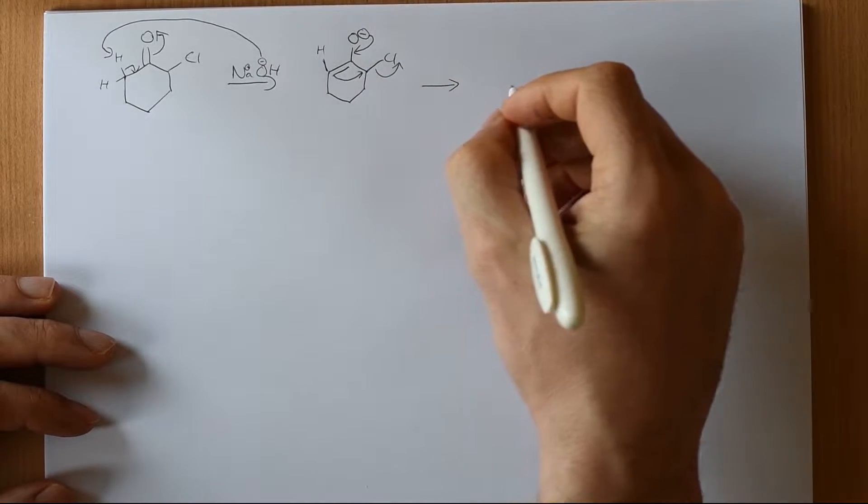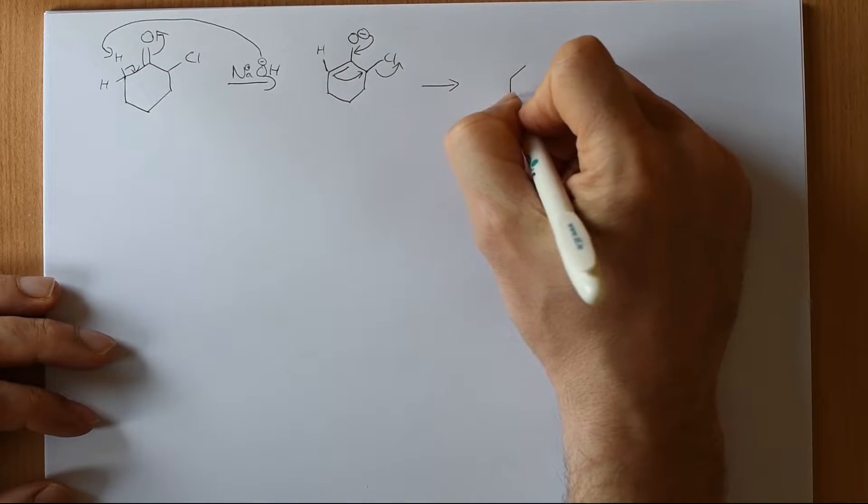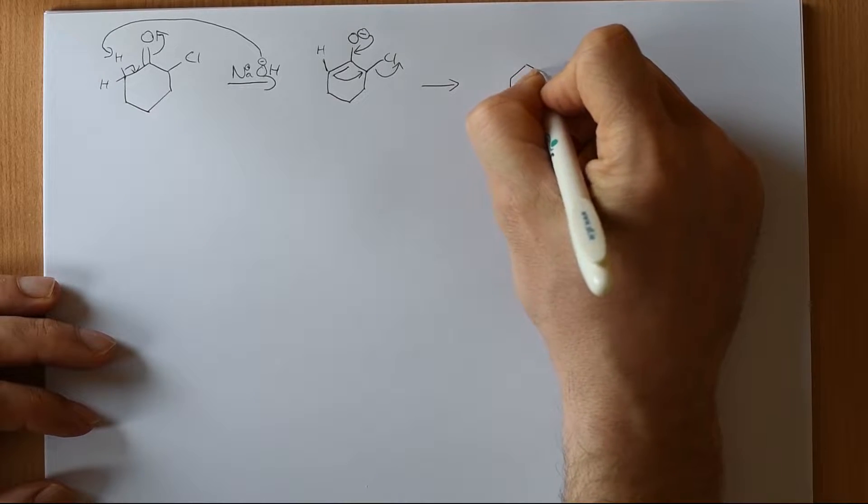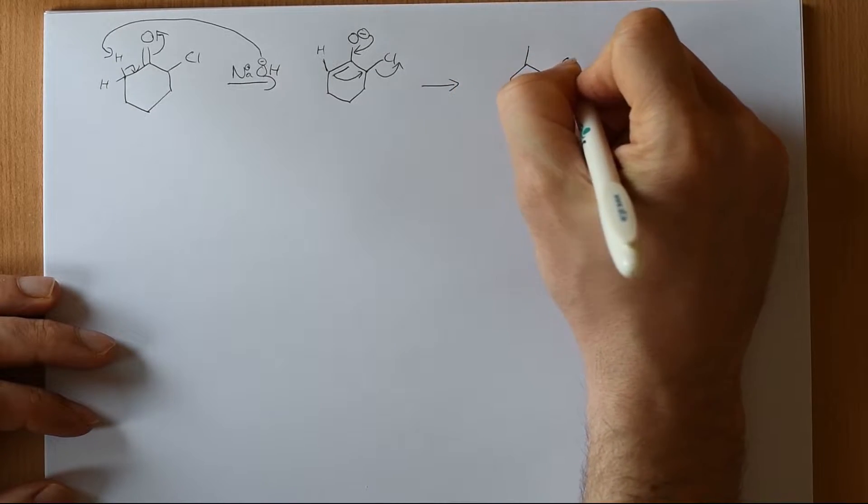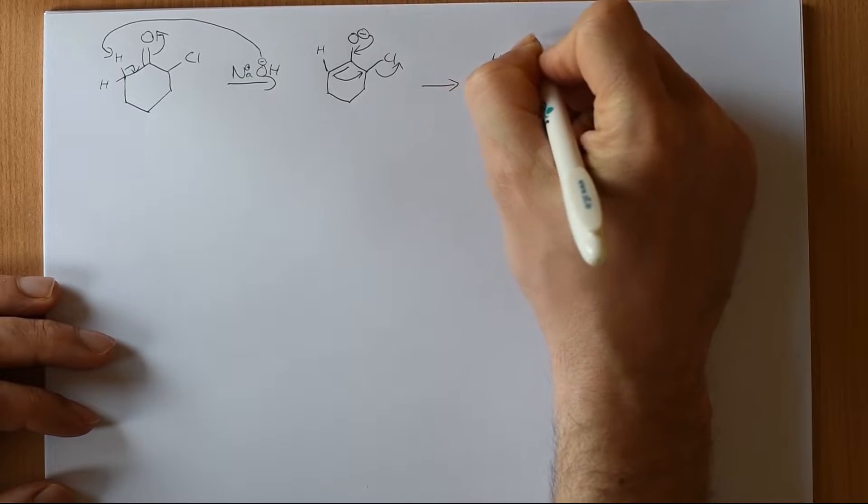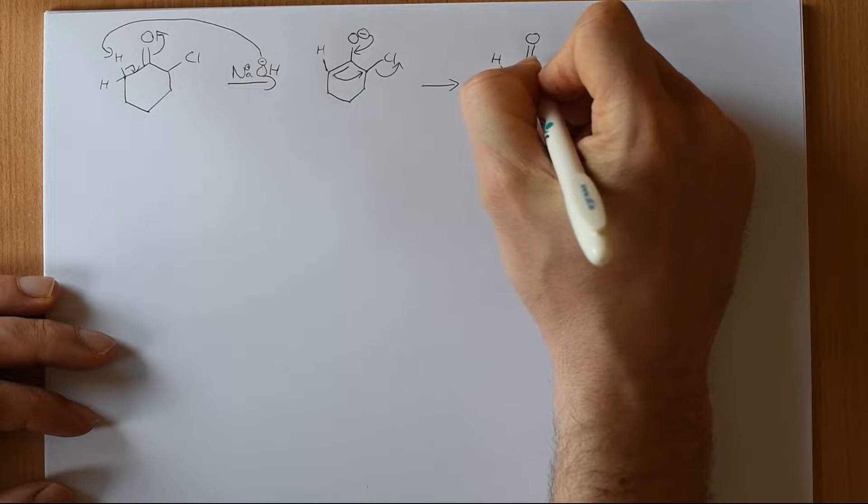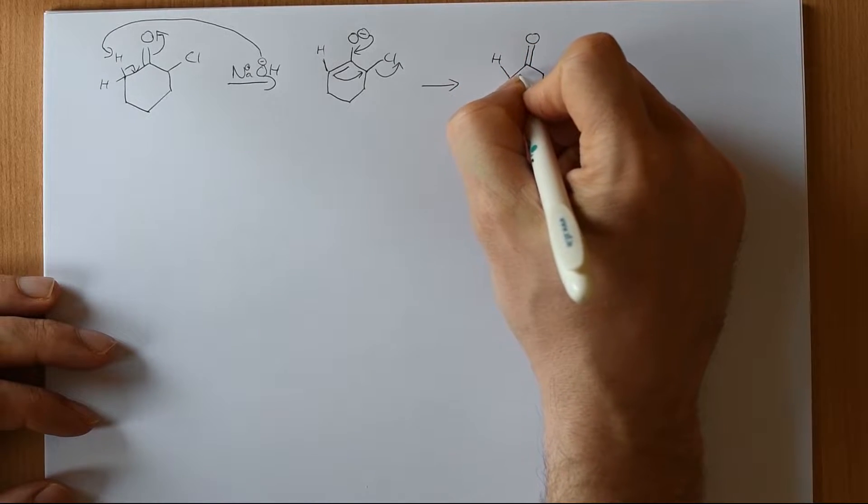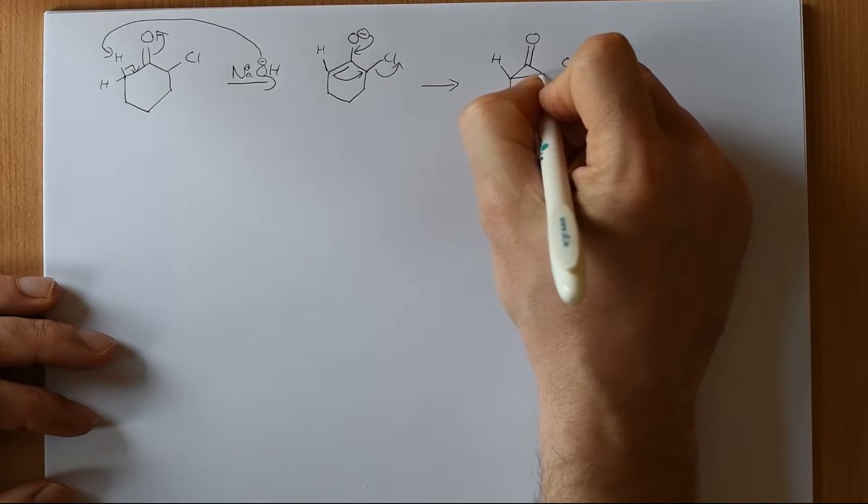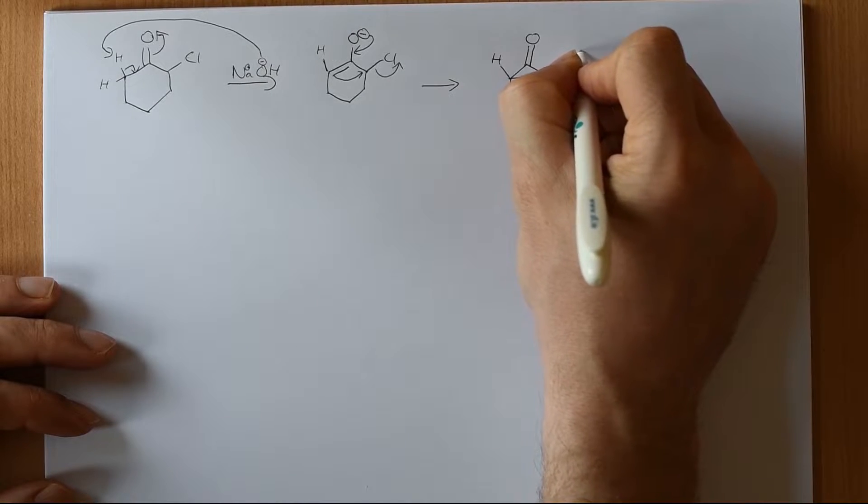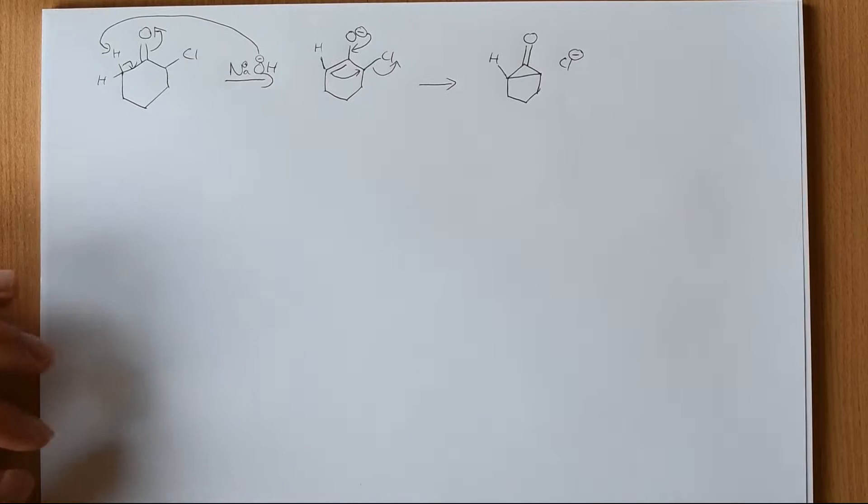And once we've done that, if we draw out everything that's there except for what's changed, we can see what we now have. So we took one of the lone pairs in the oxygen, reformed the carbon oxygen double bond. We've taken this pair of electrons that was the carbon-carbon double bond. We've made a new carbon-carbon bond and we've kicked out the chlorine and we now have a cyclopropanone.